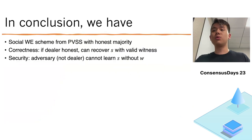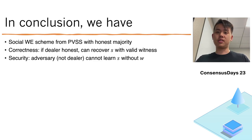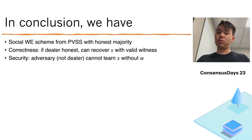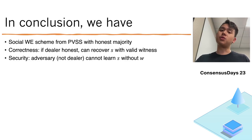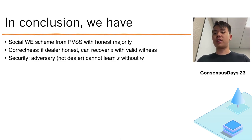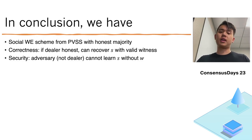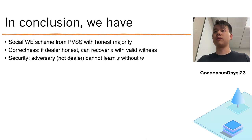In conclusion, we have a social witness encryption scheme from PVSS with honest majority. It has desirable properties: correctness — if the dealer is honest, they can recover S with a valid witness — and security, because an adversary who is not the dealer cannot learn the secret without the witness itself.